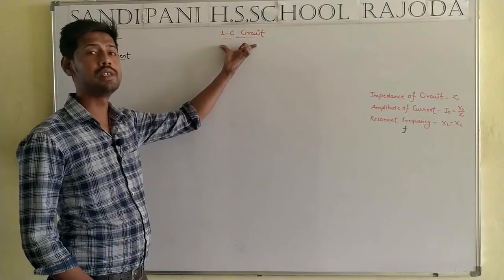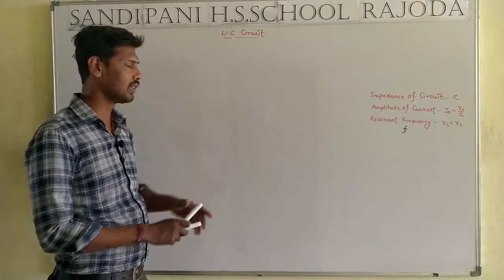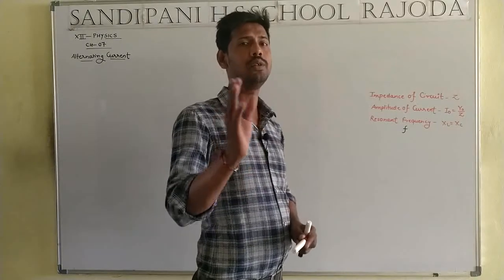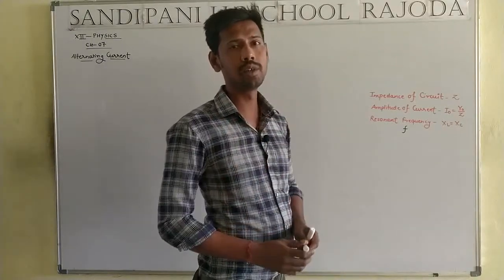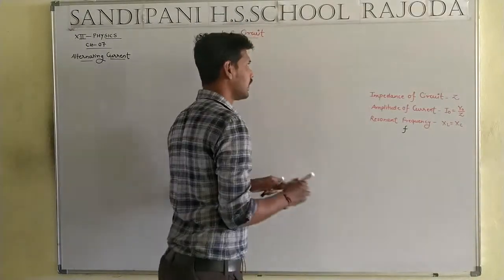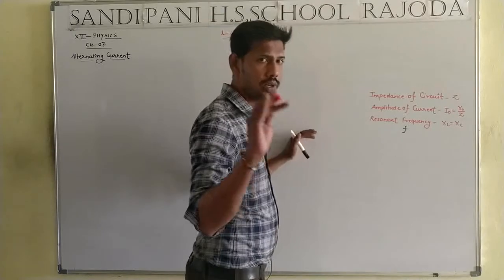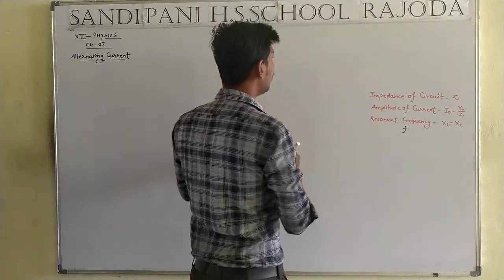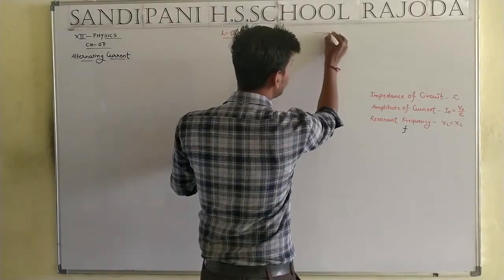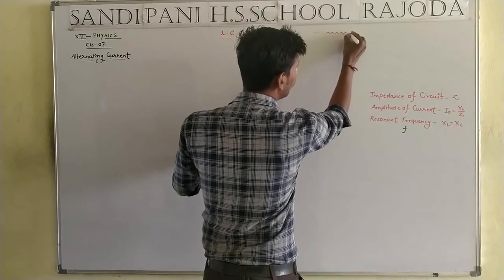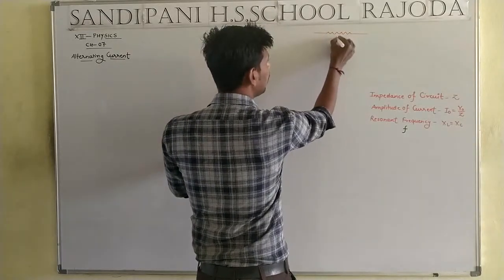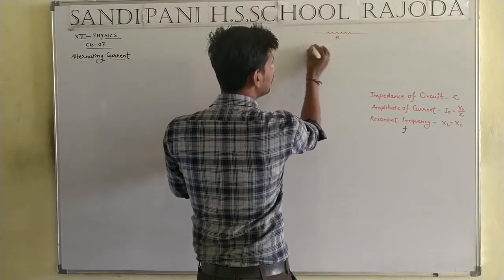Today's question is the LC circuit. What is the meaning of circuit? A circuit is basically divided into two categories: first one is AC circuit, second one is DC circuit. According to our syllabus, the combination consists of resistance R, inductance L, and capacitance C.